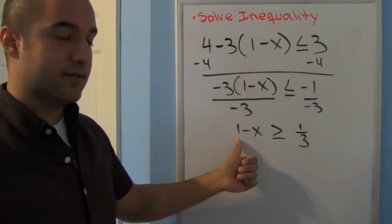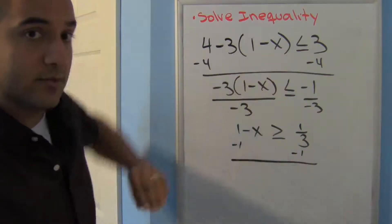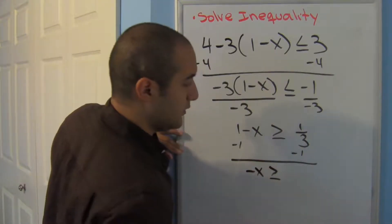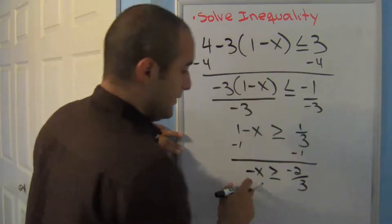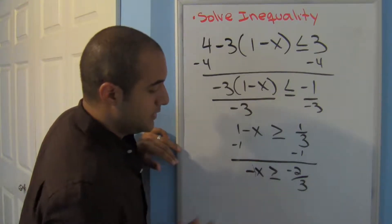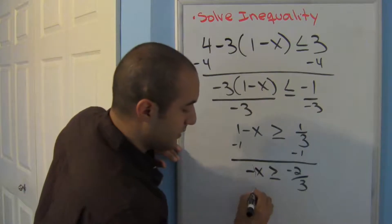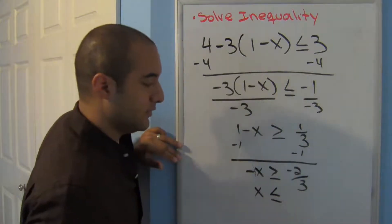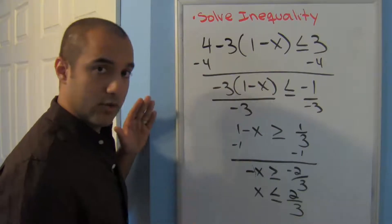Dividing by negative 3 means I flip the symbol and get 1 minus x greater than or equal to 1 third. To get x by itself I subtract 1 from both sides. Notice that's a negative x — that's where people make mistakes, forgetting about the negative x. So negative x is greater than or equal to negative 2 thirds. Since this is a negative 1 coefficient, I divide by negative 1, flip my symbol again, and x is less than or equal to 2 thirds.